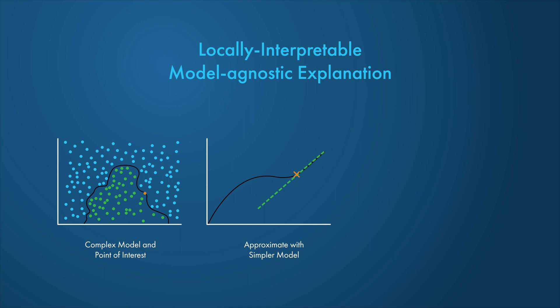The simple model is used to determine the importance of features of the input data as a proxy for the importance of features to the deep learning model.